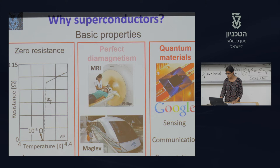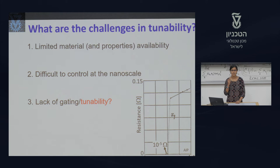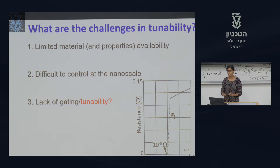Superconductors have many applications, but what is the difficulty in integrating superconducting materials into current electronic devices? One issue is tunability, because typically electronic devices are tuned by applying voltage or current, but since superconductors are near zero resistance, we cannot use typical tuning conditions.